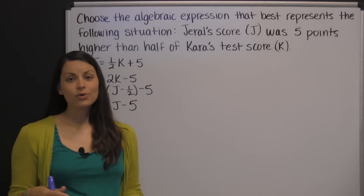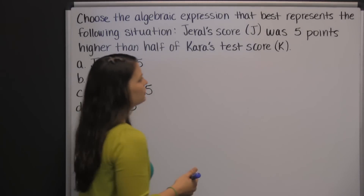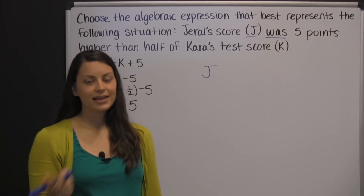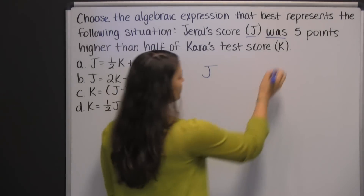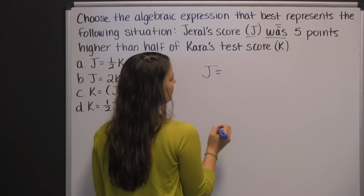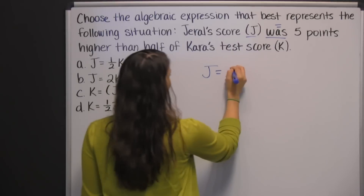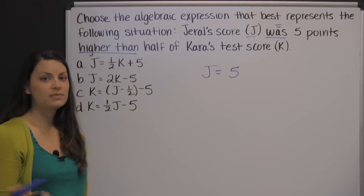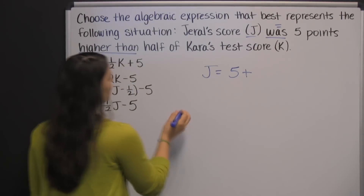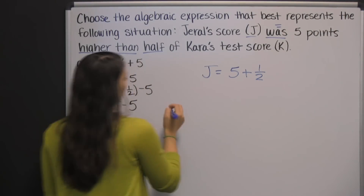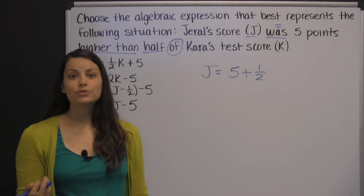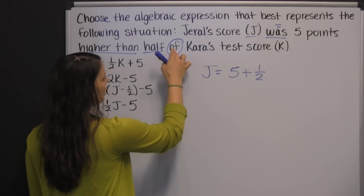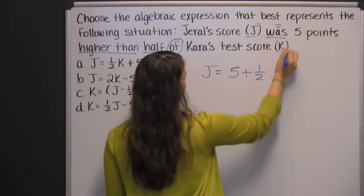I like to say that we're taking English and translating it into math in this case. If you can figure out what the key words mean, this is actually pretty simple. Starting with J — the word 'was' is the past tense of 'is,' and 'is' in math means equals. So 'was' is an equal sign. Then five is five. 'Higher than' tells you to add, just like 'more than' or 'greater than' — all those words mean to add. 'Half' of course means half. 'Of' is another really important word: 'of' tells you to multiply whatever comes on either side of it. So it's half times Kara's test score, K — meaning half K.